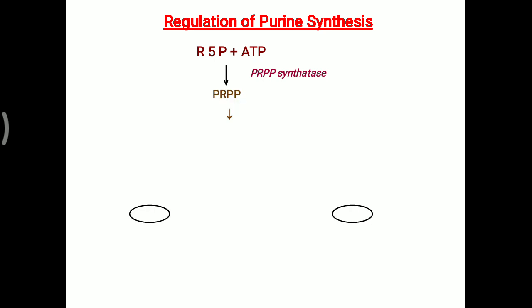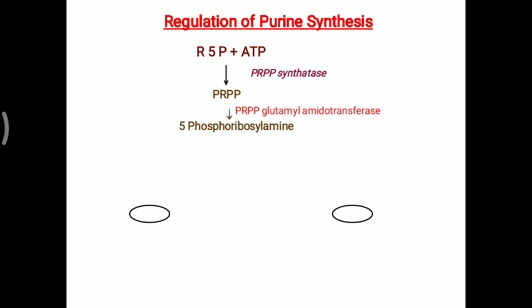PRPP is further converted into the PRA molecule, that is phosphoribosyl amine, with the help of PRPP glutamyl amidotransferase enzyme. For that enzymatic activity, glutamine is needed, which will add an amine group over the PRPP. Along with that, glutamic acid and pyrophosphate will be released in this reaction, and the final PRA molecule - phosphoribosyl amine - is synthesized.